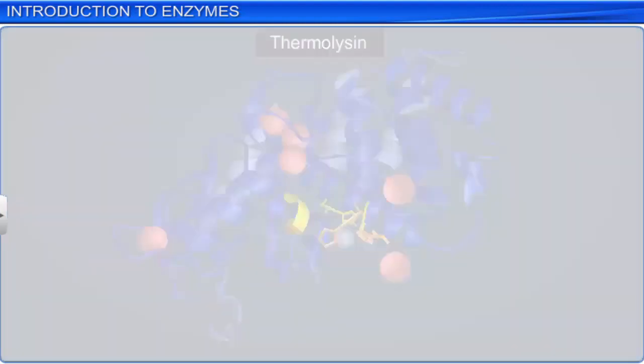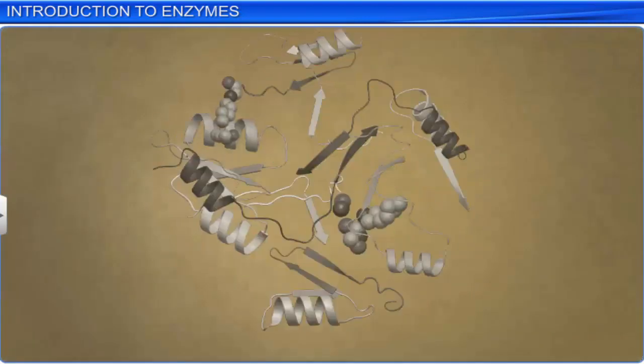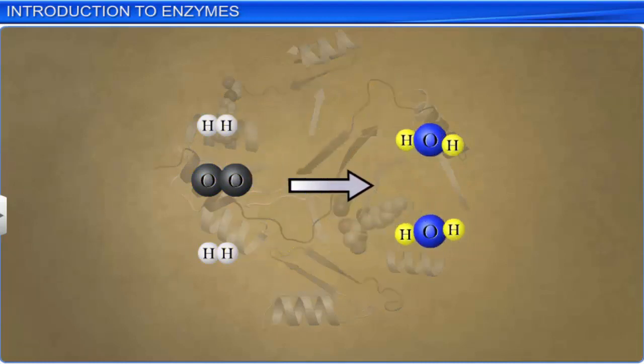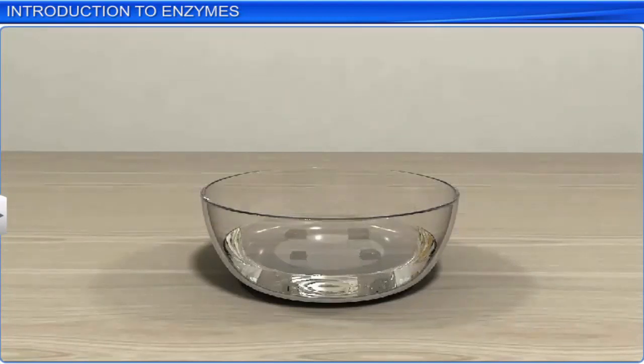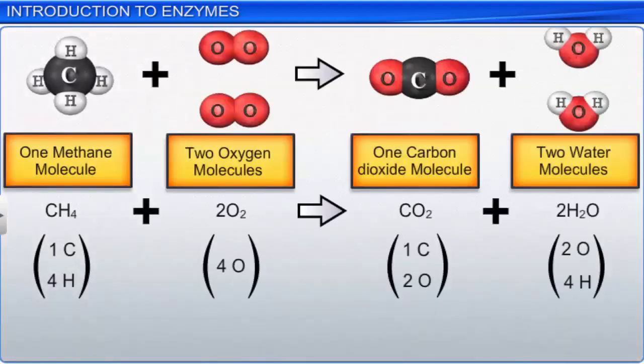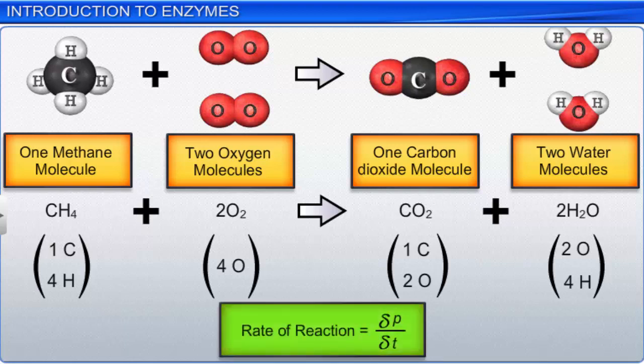To understand the working of enzymes, we'll begin by learning more about chemical reactions. Chemical compounds undergo physical and chemical changes. When a compound changes shape without breaking its existing bonds, it is said to be a physical change. For example, ice melting to form water. On the other hand, when the bonds in a compound are broken, and new bonds are formed during transformation, it is called a chemical reaction. The rate of a reaction is defined as the amount of a product formed per unit time. It can be expressed as delta P upon delta T. Various factors, such as temperature and pressure, influence the rate of reaction.